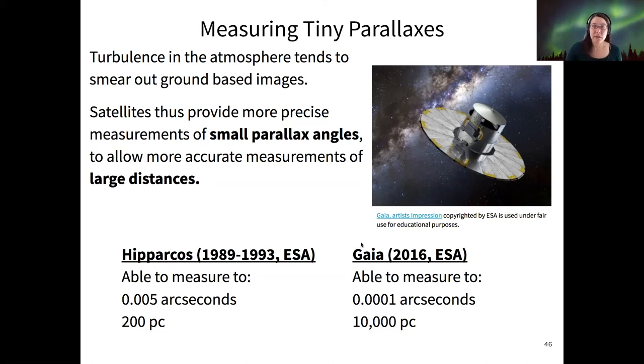So even with these space-based telescopes, there's a limit to how far they can measure, because there's a limit to the precision in that tiny parallax shift that they can measure. And so 10,000 parsecs sounds like a lot, but actually, how big is it? Is this enough to measure between all the different galaxies?